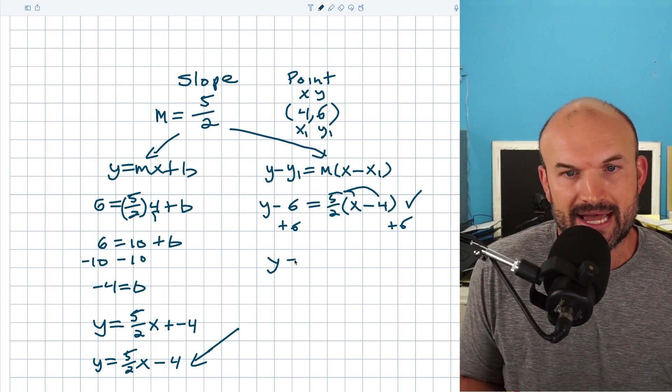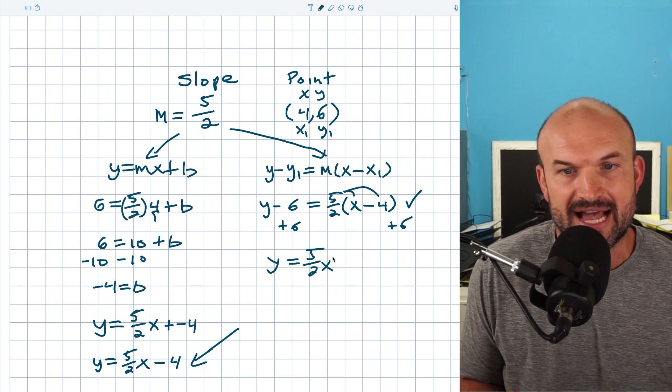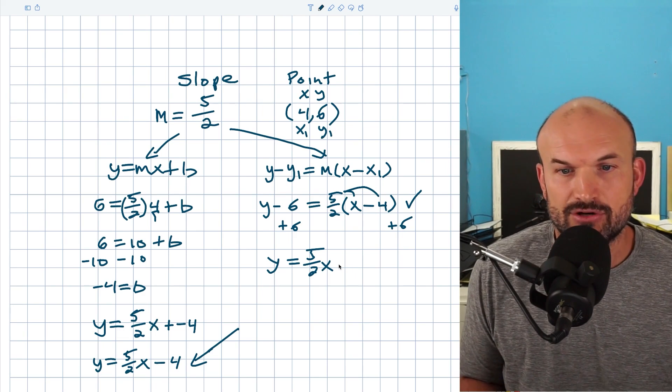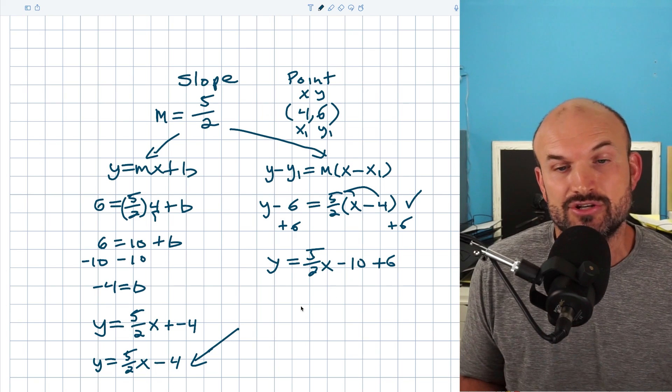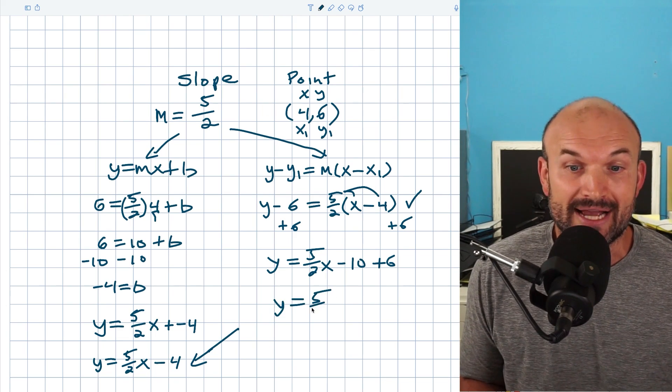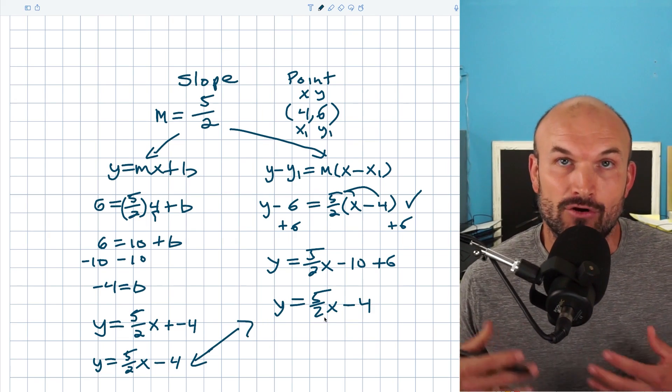So let's go ahead and do that. We have y equals five halves times x is going to be five halves x. Five halves times negative four, we already talked about that, is going to be negative 10. And that's going to be plus six. And now you can simplify that to negative four. So therefore we get y equals five halves x minus four, which you can see is the exact same as I had over here.